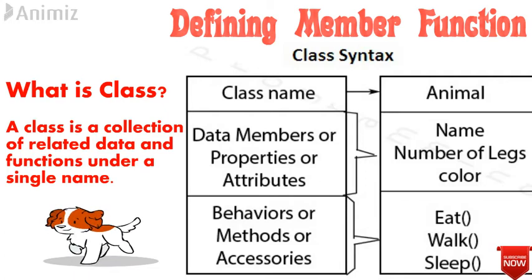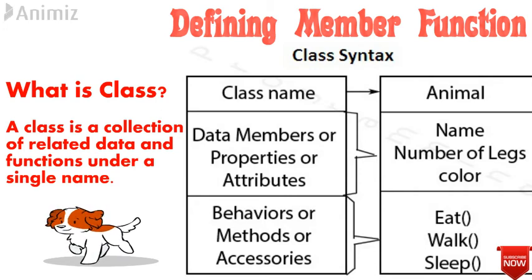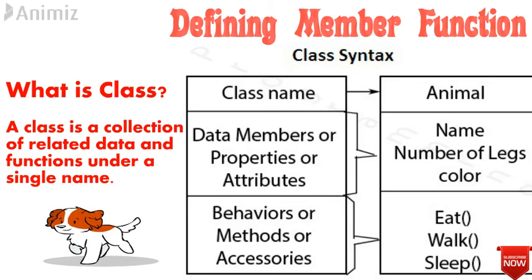For example, consider a dog as a class name. The name of a dog, number of legs, and color are nothing but data members or attributes. The functions like eats, walk, and sleep come under the member functions of a dog. Basically, a class is a collection of related data members and member functions under a single name.